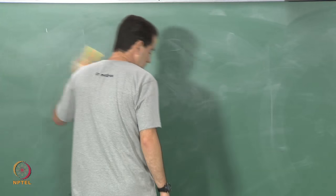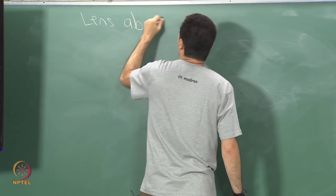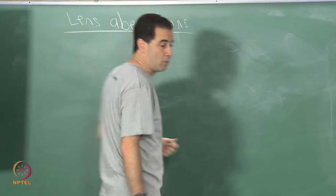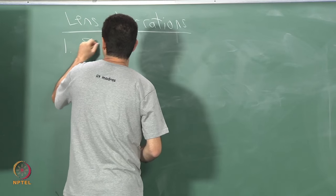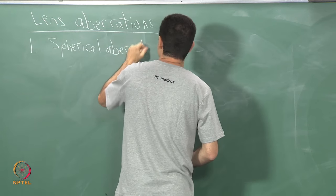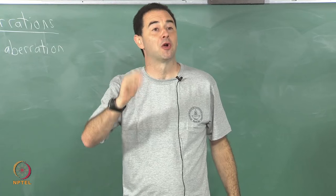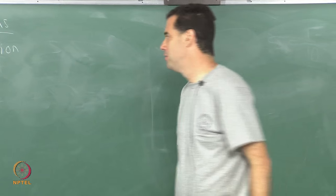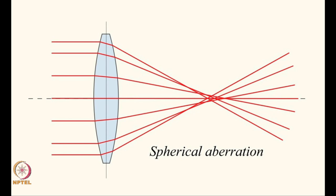I want to give you an idea of the kinds of things that can happen. The first aberration I will talk about is spherical aberration. The cheapest surface to cut for lenses is a spherical surface; however, it is not ideal for generating a perfect image in the image plane. What tends to happen is that parallel rays of light coming in do not converge at a common focal point — they tend to spread out.